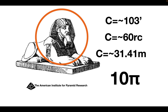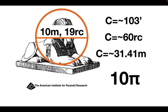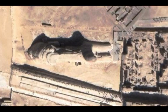Another interesting thing about the diameter formed from a circumference of that size is that it's an even number in royal cubits — about 19 royal cubits — and it's also an even number in meters: 10 meters. That doesn't often happen — another interesting key there.